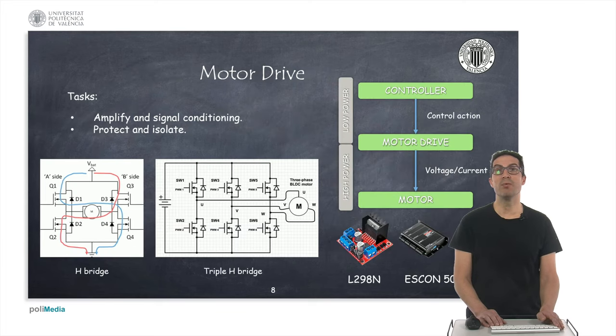The motor drive is a very important element for controlling a motor. It is in charge of supplying the energy in the form of voltage and indirectly current that the motor needs, but isolating the low power signals at which the controller usually works from high power signals at which the motor usually requires. Therefore, one of its main tasks consists of properly amplifying and conditioning the signals to the motor, also protecting the motor from high-voltage spikes that could damage it and electrically isolating the controller from the motor drive.